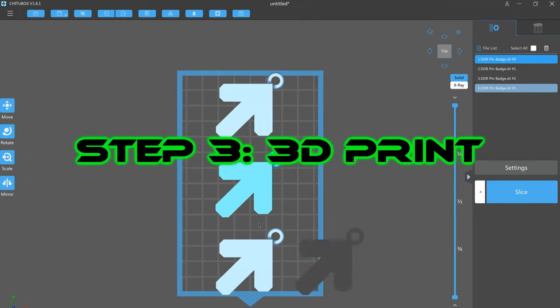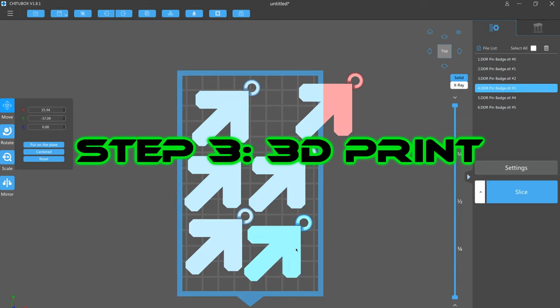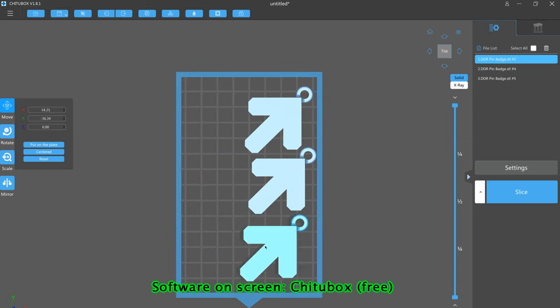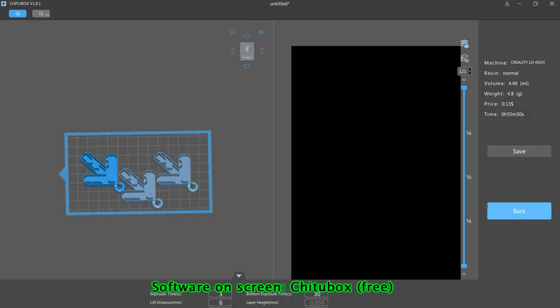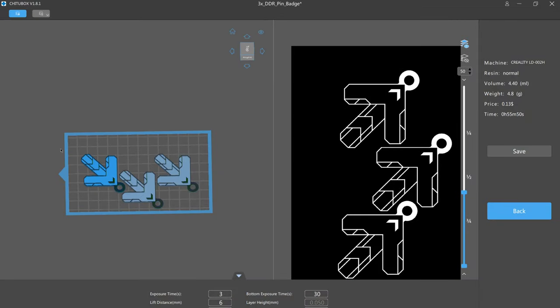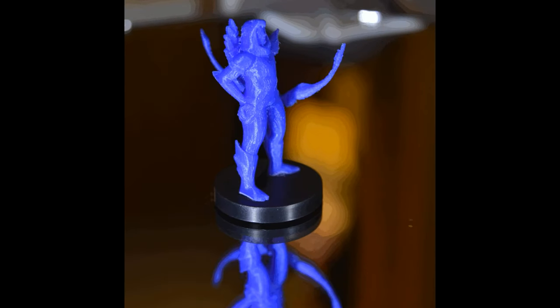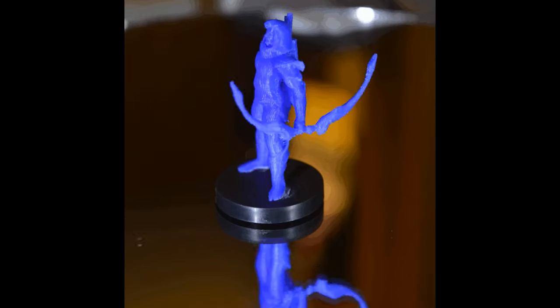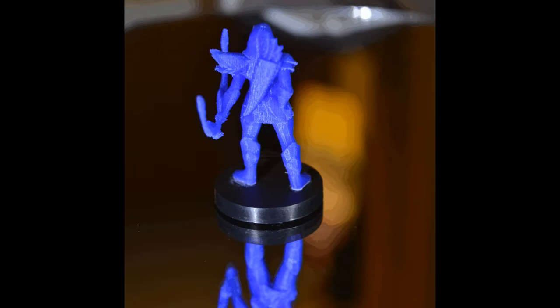So on to the 3D printing. Resin printing I believe is the best option but a well-tuned FDM printer with a small nozzle should also be able to do well. I used to have good luck with a 0.2 millimeter nozzle, I could even print D&D minifigs with it so if you can get your FDM printer tuned to this point there's no reason why you can't do this.